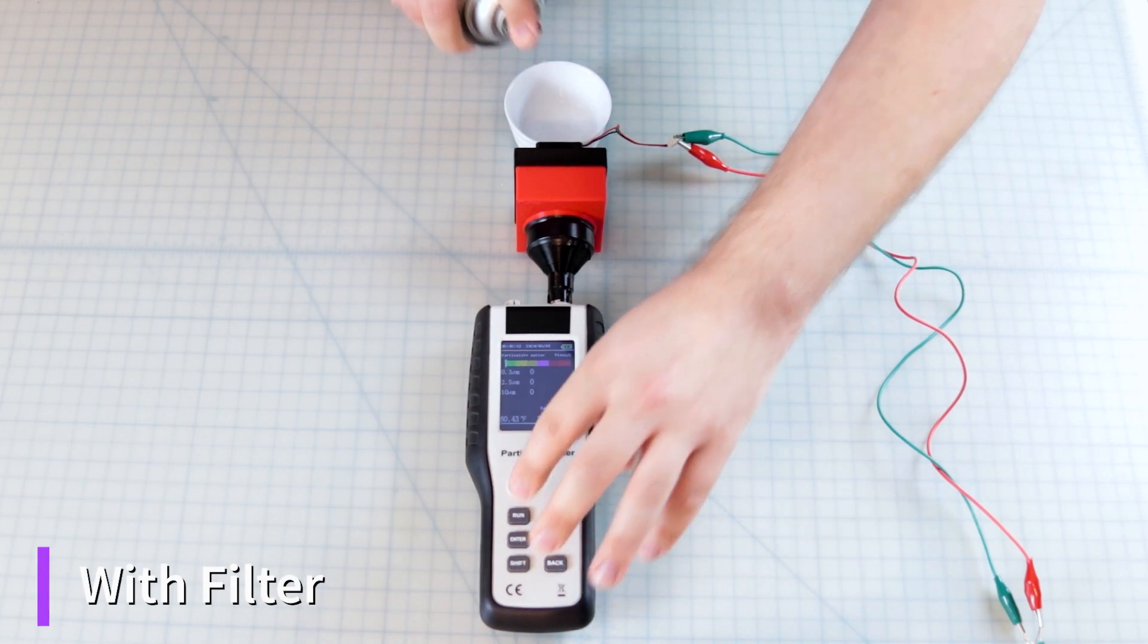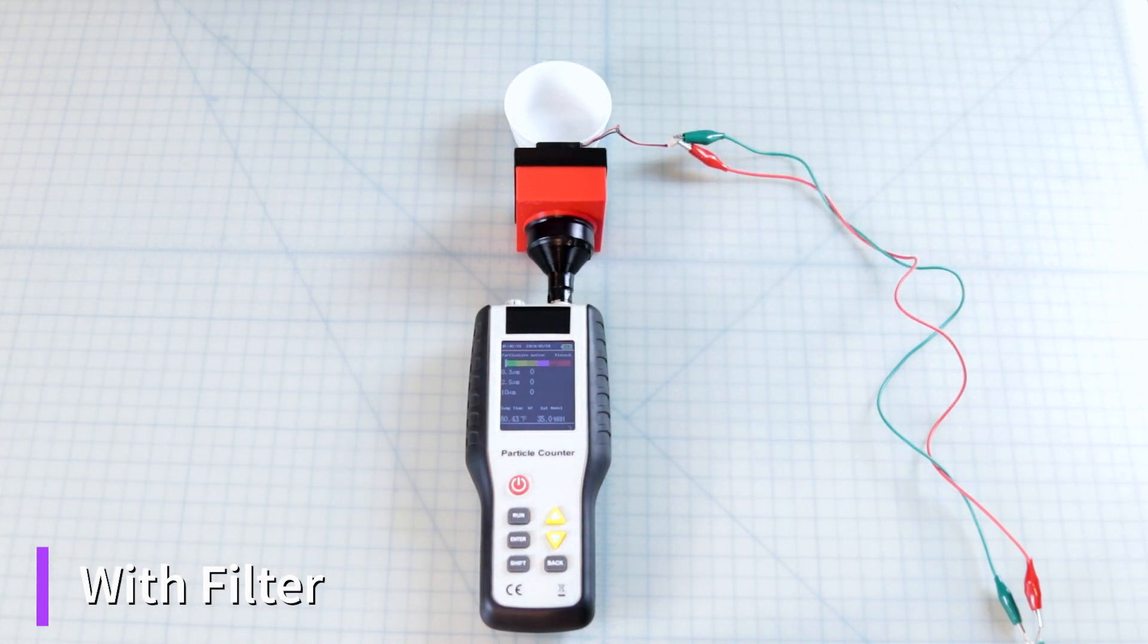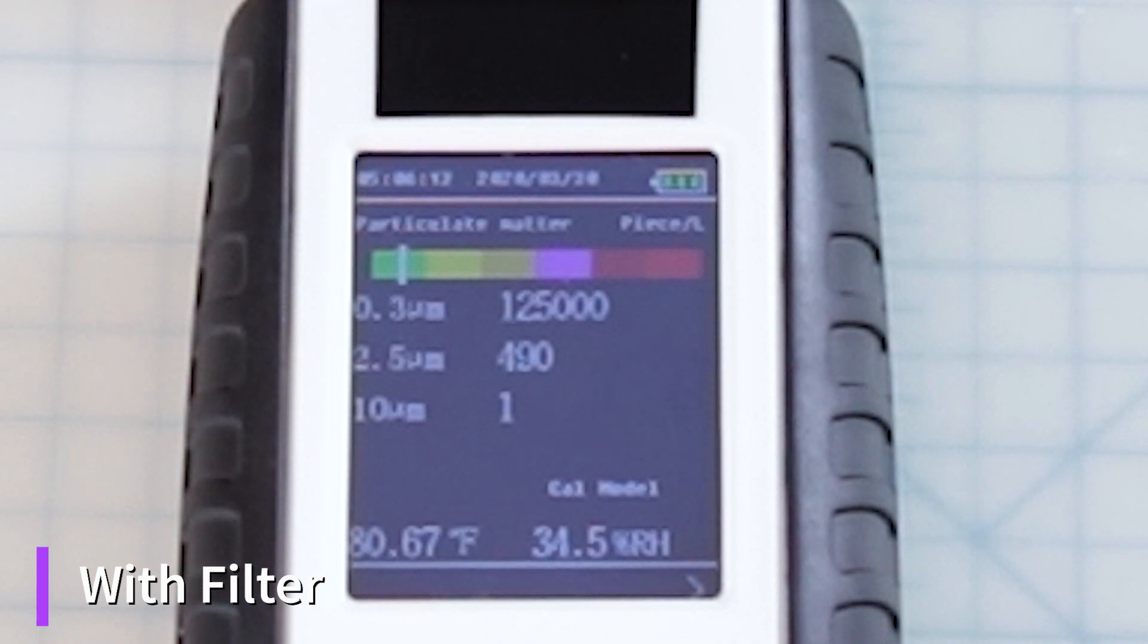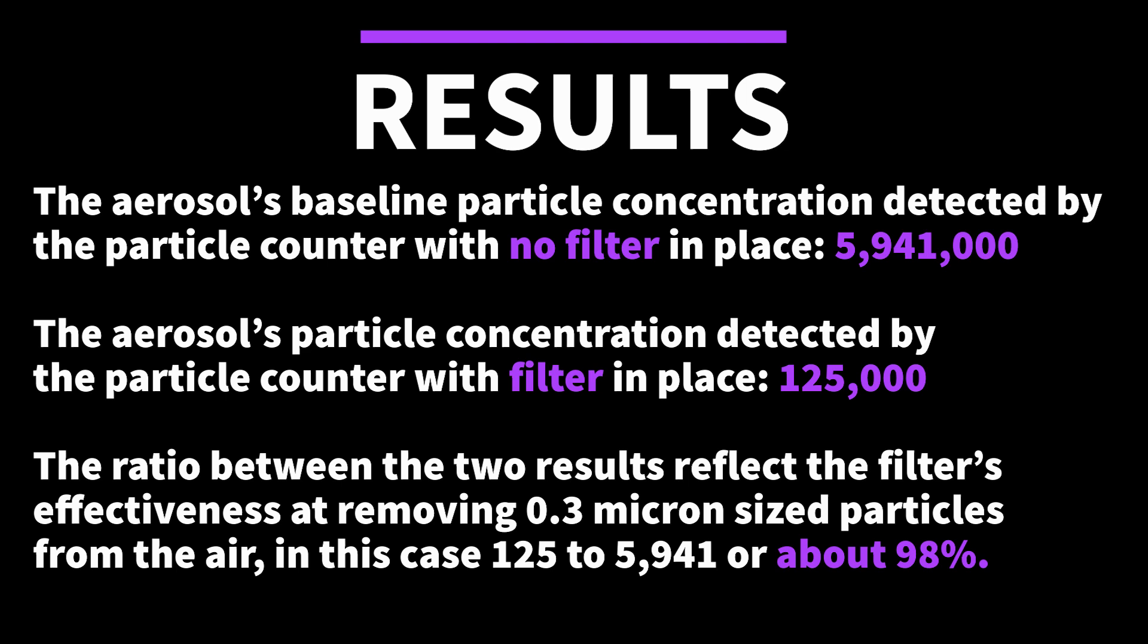Next, we'll perform an analysis with the completed filter cassette. From these results, we can see that the aerosol's baseline particle concentration detected by the particle counter with no filter in place was 5.9 million. The aerosol's particle concentration detected by the particle counter with the filter in place was 125,000. The ratio between the two results reflects the filter's effectiveness at removing 0.3 micron sized particles from the air. That number, in this case, comes to about 98%.